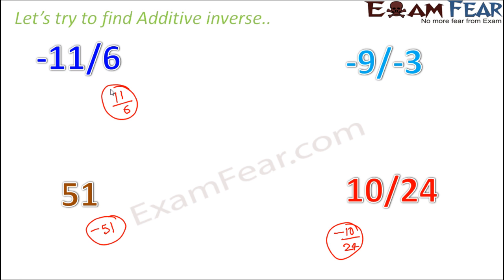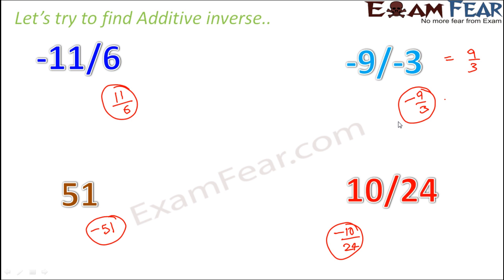For minus 9 over minus 3 — what would be the additive inverse? Minus 9 over minus 3 is actually 9/3, because the two minus signs cancel out. So the additive inverse of 9/3 is minus 9/3. This is important: do not think both signs are reversed independently — overall, minus 9 over minus 3 equals 9/3, so its additive inverse is minus 9/3. The simple tip: overall if the rational number is positive, its additive inverse is negative, and if negative, the additive inverse is positive.